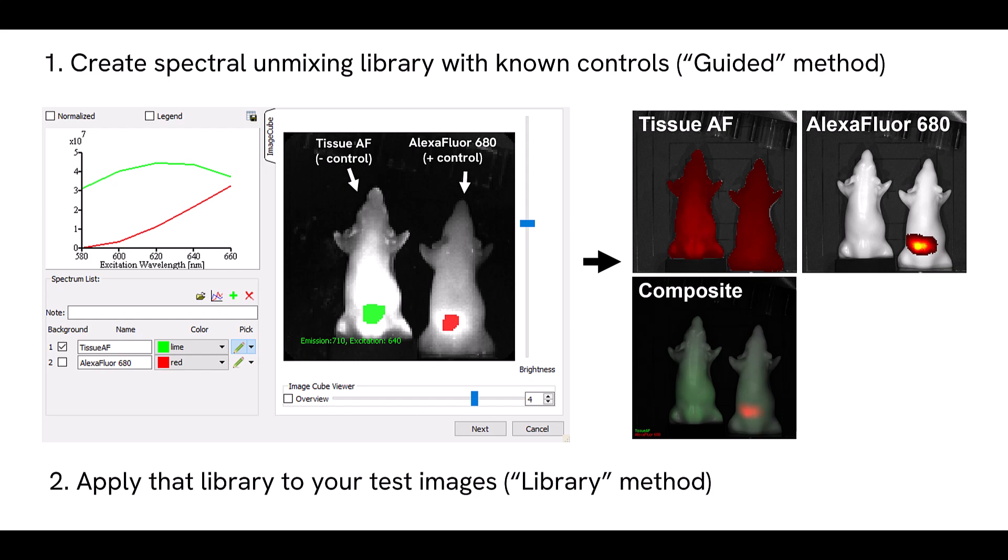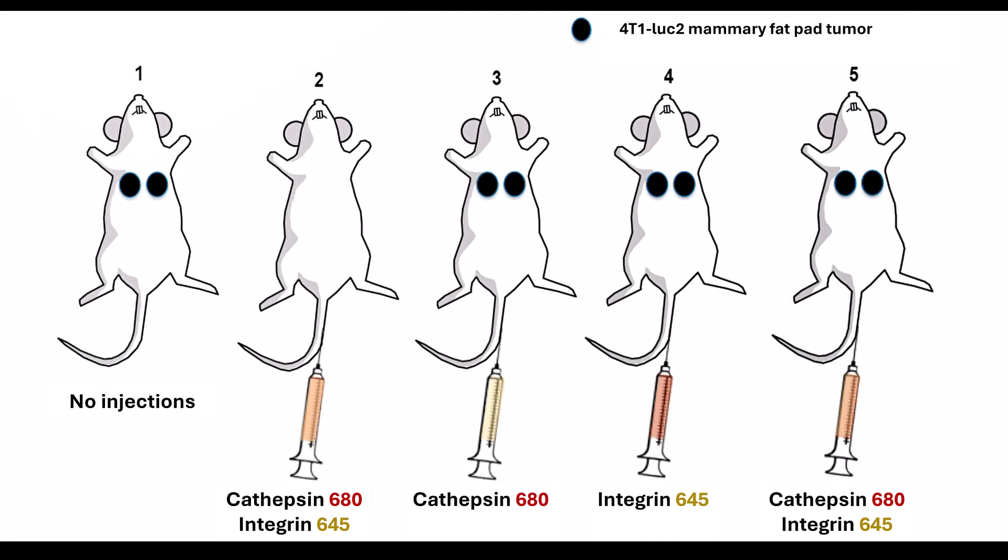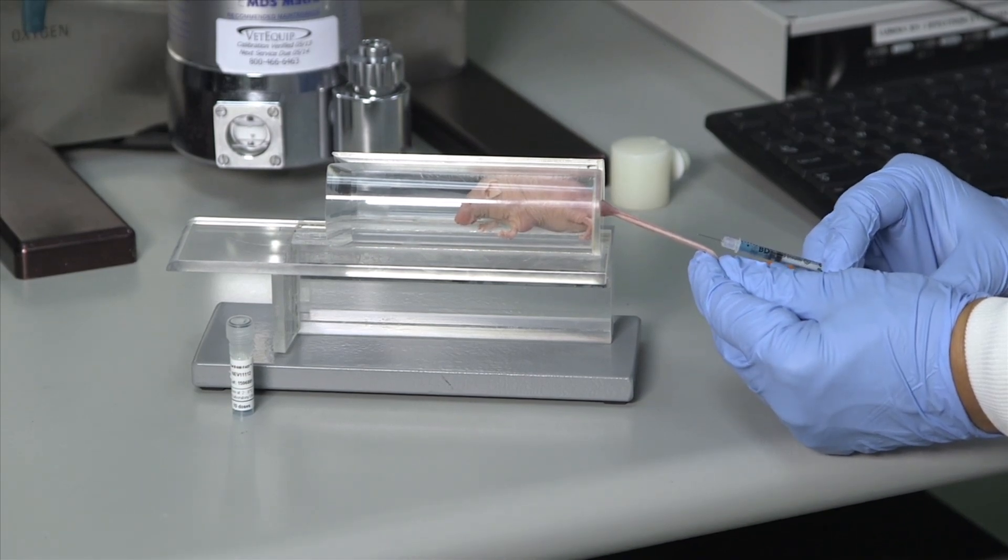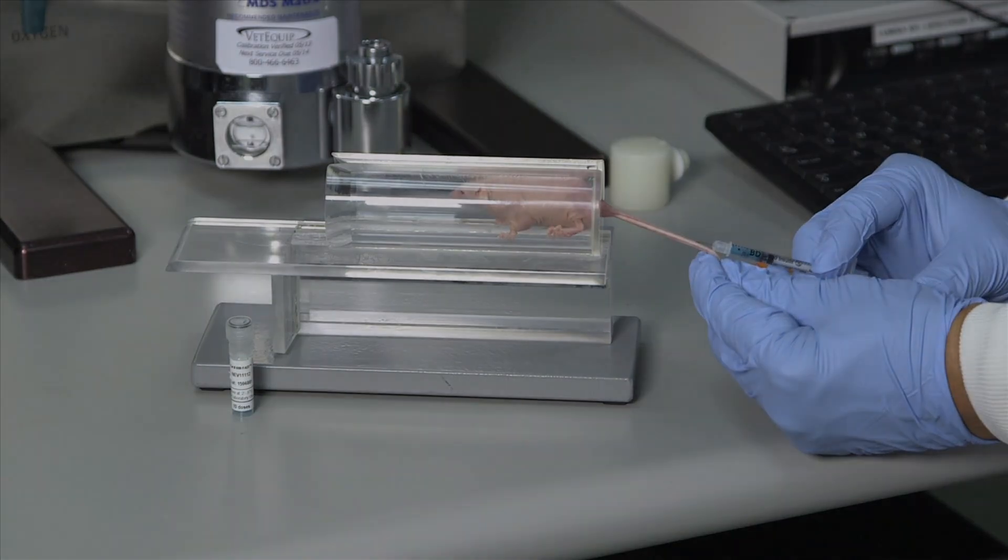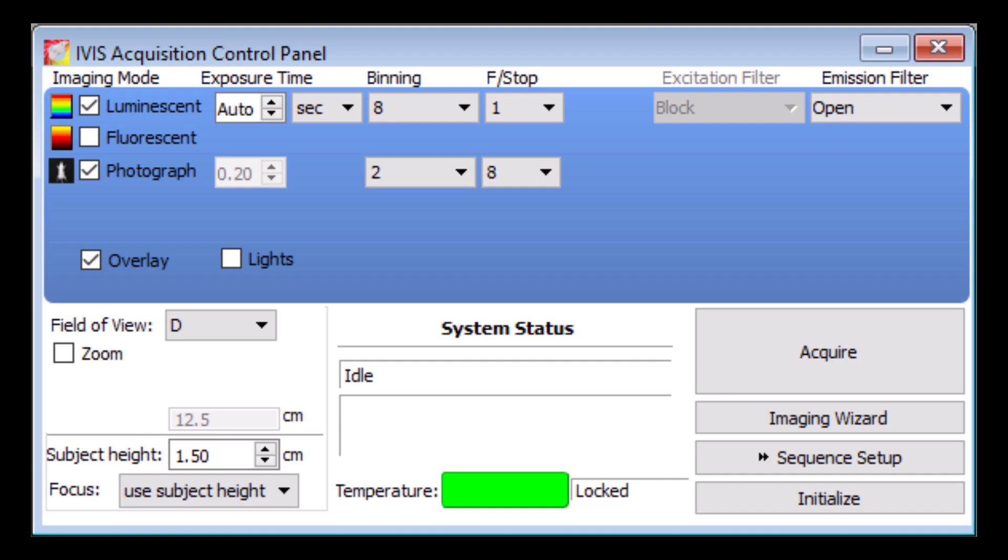Let's move on to the experimental design and acquisition setup. Mouse 1 will be a naive control animal bearing tumors but receiving no probe injections to show tissue autofluorescence. Mouse 2 will be a negative control with no tumor but with both probes injected. Mouse 3 will be a positive control with tumors injected with only the VivoSense ProCathepsin 680 probe. Mouse 4 has tumors and is injected with only the VivoSense integrin receptor 645 probe. Mouse 5 has tumors and is injected with both probes.